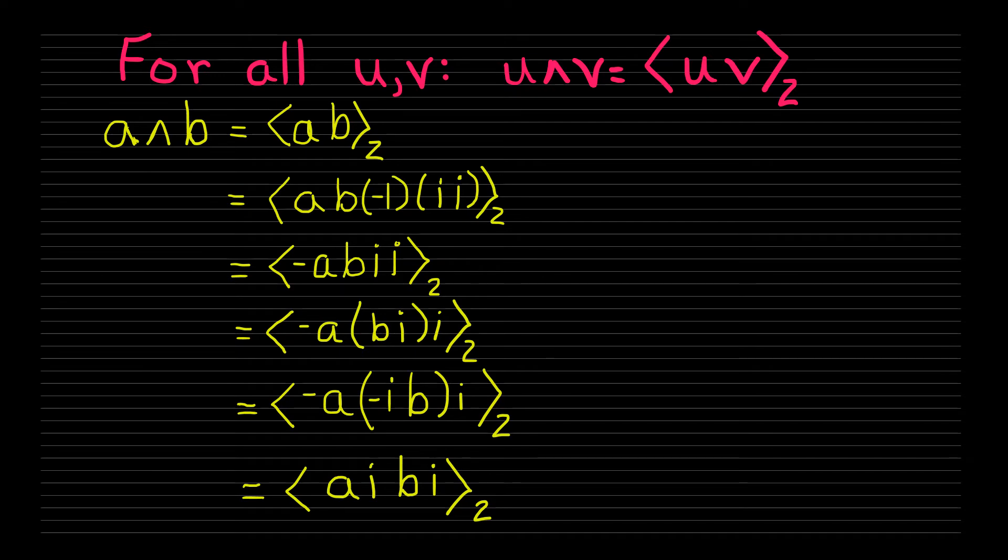We start from the idea that for any two vectors u and v, u wedge v is the bivector part of the geometric product u times v. So in our case, since this definition applies to all pairs of vectors, a wedge b is the grade 2 part of the geometric product ab.